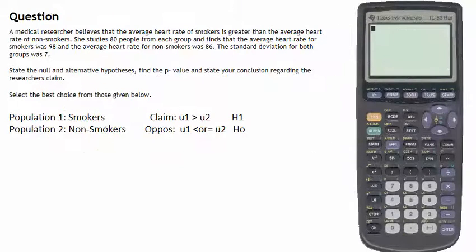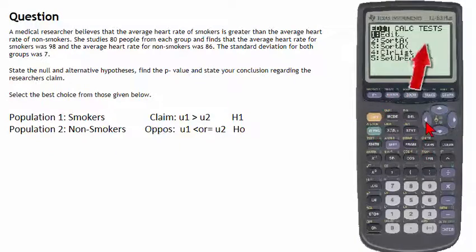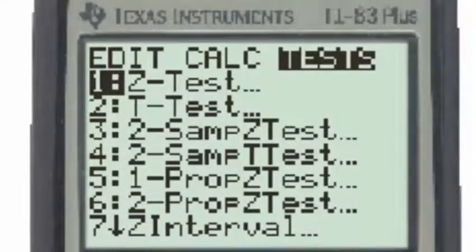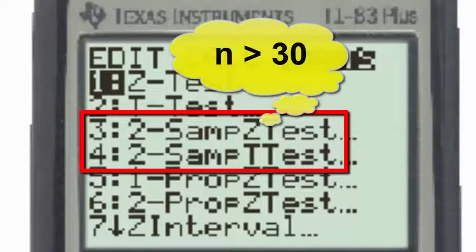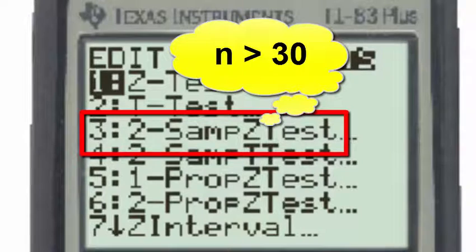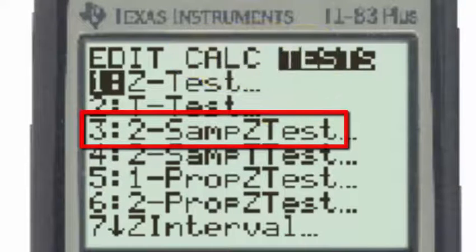In deciding which of the hypothesis tests we will use, going to stat and then the test menu, we see that only two of the choices involve two population means, numbers 3 and number 4. And since both samples used in this study were more than 30, we will use number 3, the two-sample z-test.